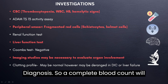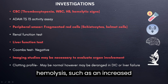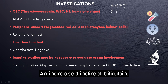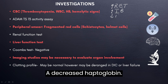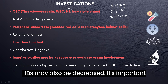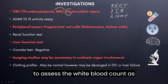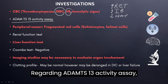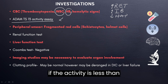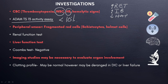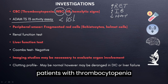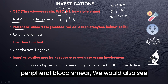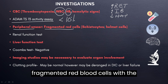For diagnosis, a complete blood count will show thrombocytopenia with signs of hemolysis, such as an increased reticulocyte count, increased indirect bilirubin, decreased haptoglobin, and decreased hemoglobin. It is important to assess the white blood cell count as infections are secondary causes of TTP. Regarding the ADAMTS13 activity assay, if the activity is less than 10%, this confirms the diagnosis of TTP in patients with thrombocytopenia and signs of hemolysis. On a peripheral blood smear, we would also see fragmented red blood cells with the presence of schistocytes.